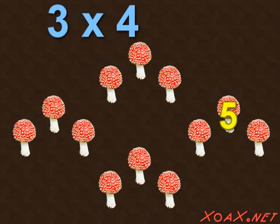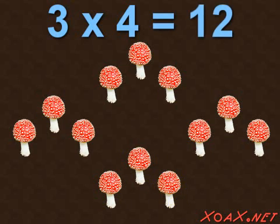Then we get 1, 2, 3, 4, 5, 6, 7, 8, 9, 10, 11, 12 toadstools. So the product of 3 times 4 is 12.